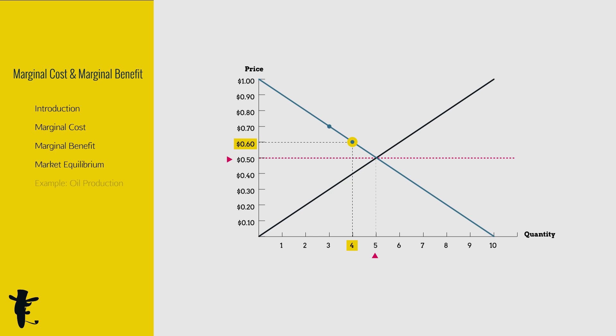At the fifth unit, the extra happiness you get is $0.50. Price remains at $0.50. Okay! Let's consume! At the sixth unit, the extra happiness you get is $0.40, lower than the price of rice. Keep the money! No more rice! That's why that's the equilibrium.